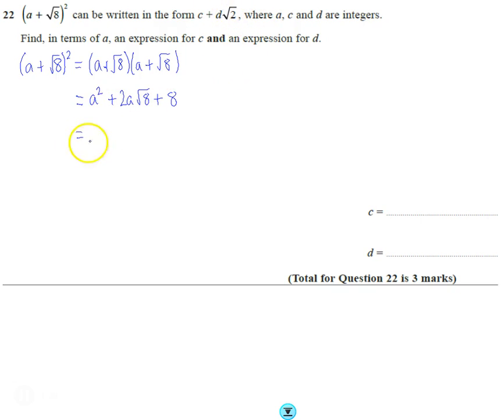We need something with √2, so I'm going to simplify. We've got a² + 2a, and I'm going to simplify the √8 into √4·√2, then keep the +8. So that's a² + 2a times 2√2 + 8, which equals a² + 4a√2 + 8.